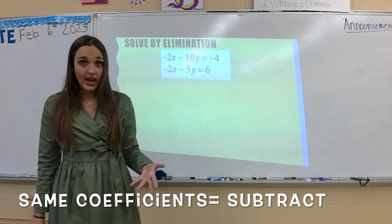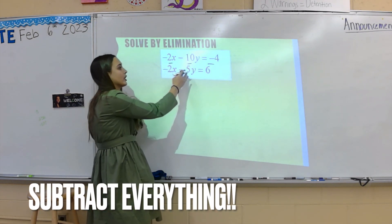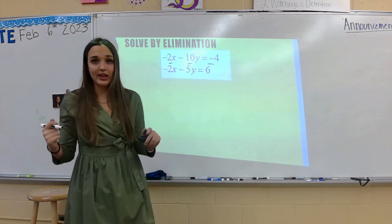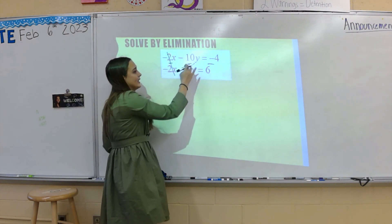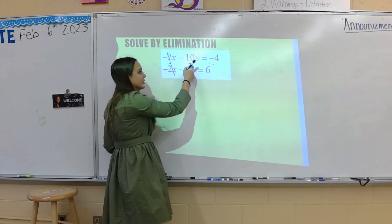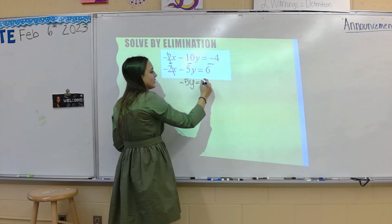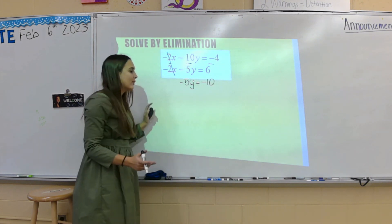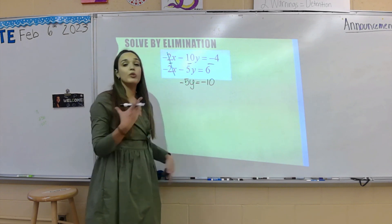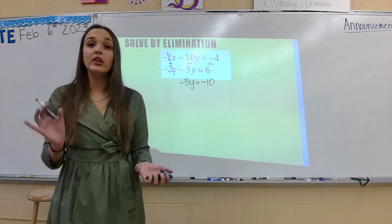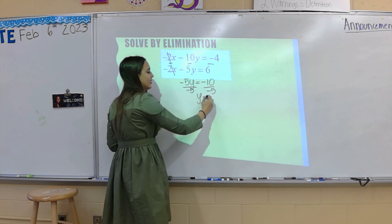If I do negative 2x minus negative 2x, those cancel out. So we're going to subtract to cancel them out. When we're subtracting, we have to subtract all terms — we can't just do subtraction here and addition there. So once I subtract, I get negative 2x minus negative 2x — that goes away. Then I have negative 10y minus negative 5y; minus a negative becomes a plus, so that becomes negative 5y. Negative 4 minus 6 gives me negative 10. Now we're at a one-step equation — that's exactly what we want. I'm going to divide by negative 5, and I get y equals 2.